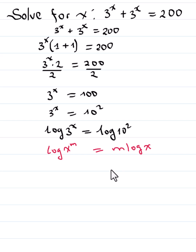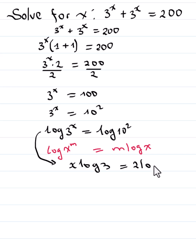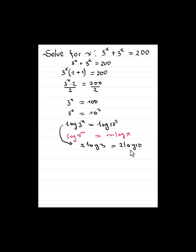So we're going to use that here. This gives us x log 3 is equal to 2 log 10. But log 10 base 10 is equal to 1. So we have x log 3 is equal to 2 times 1. Therefore x is equal to 2 over log 3.